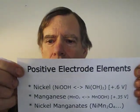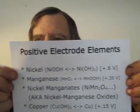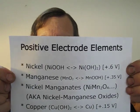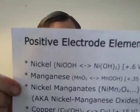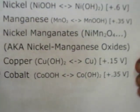Electrode materials are the chemical substances that get oxidized and reduced as the battery charges and discharges. For positive electrodes, I'll be discussing nickel — meaning nickel oxyhydroxide discharging to nickel hydroxide — and manganese oxide, which only seems to discharge and won't recharge, though otherwise it would probably be better than nickel. There are also nickel manganates, which I have good hopes for but need more experimenting. Other potential substances include copper, cobalt, and silver.